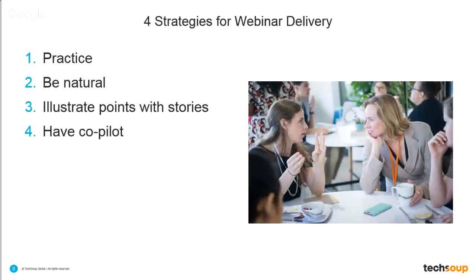Now we're going to talk about strategies for delivery. We talked about engagement — how you encourage and moderate the interaction between participants, content, and presenters. Now let's talk about your actual delivery. The first strategy is to practice. One of the things that's really important is that if I practice, I'll feel better and more comfortable with the language I'm using. I may have a script or some bullet points, but I want to practice enough to sound natural. If it's a new topic, I definitely want to practice a lot until I own the language myself.